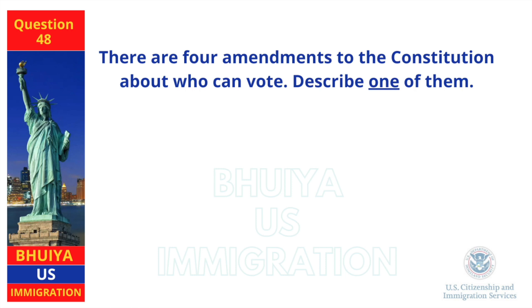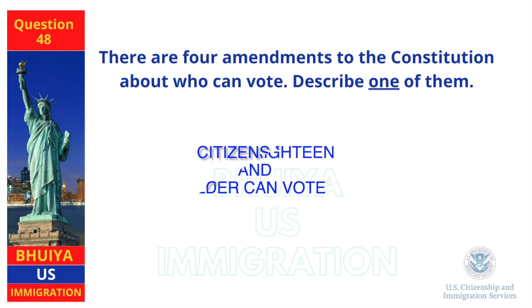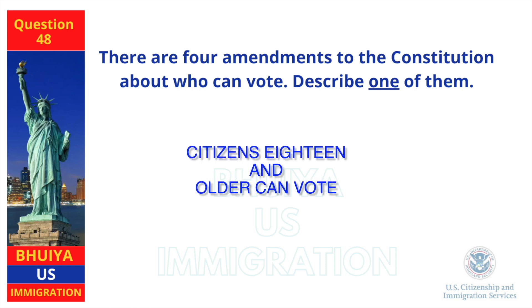There are four amendments to the Constitution about who can vote. Describe one of them. Citizens 18 and older can vote.